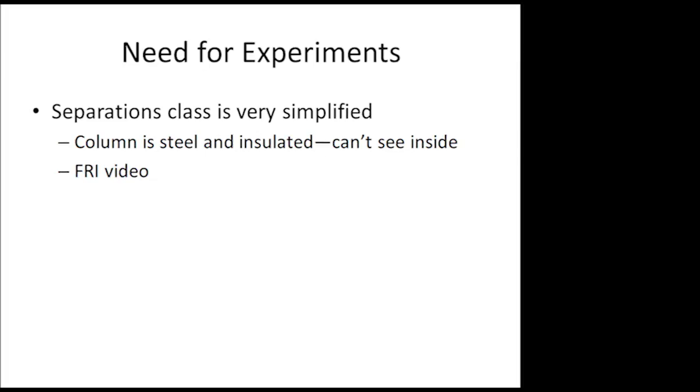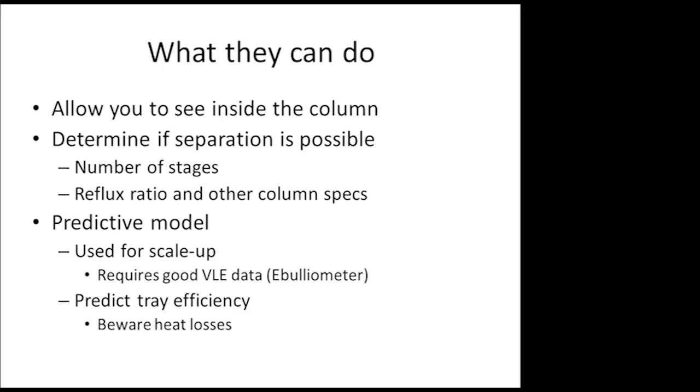With that said, we're going to talk real quick about some of the things that Oldershaw columns can do for you. First thing that they can do is they can allow you to see inside the column. That column that I showed you is a special research column that was built and it has viewports on it. No other column has that. You run your column and you have no idea what's going on inside. You can't see it. You can't look at it. There's no way to know. An Oldershaw column can help you understand what type of tray action is taking place.